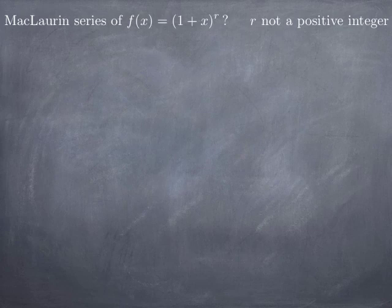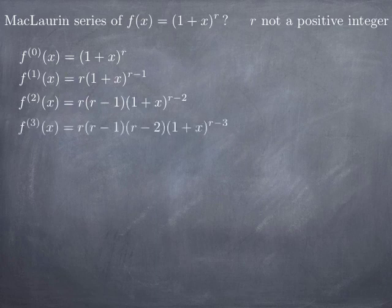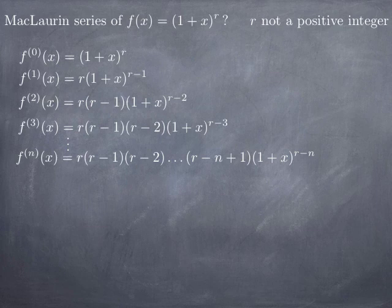So let's assume r is not a positive integer, and we're going to look for the Maclaurin series by looking at the successive derivatives of this function. The derivative of order 0 is the function itself. When we differentiate, we get r times (1 + x)^(r−1). The second derivative is r(r−1)(1+x)^(r−2), then r(r−1)(r−2)(1+x)^(r−3), and so on. If we differentiate n times, we get r(r−1)(r−2)···(r−n+1) multiplied by (1+x)^(r−n).